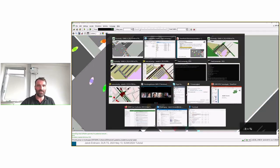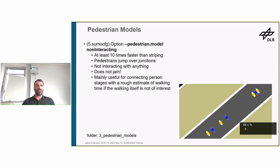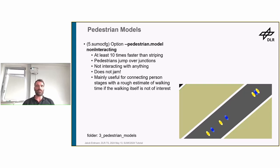There's yet one more model in Sumo: the non-interacting model. It's really fast — even 10 times faster than striping. In this model, pedestrians jump over junctions and don't interact with anything, and of course it doesn't jam. You'd use this mainly if you're interested in something like public transport and want those different riding stages connected with a rough estimate of walking time — when you're not interested in the walking itself, but all the other things a person is doing, use the non-interacting model to speed things up.